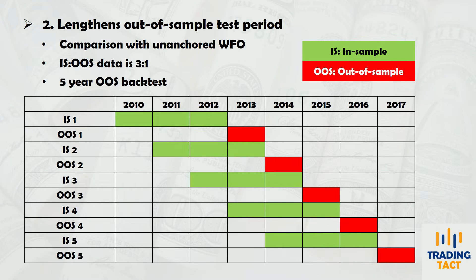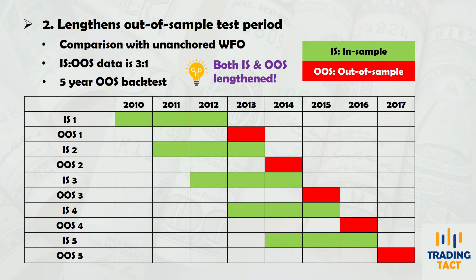Therefore, by cleverly manipulating the available data, walk-forward optimization lengthens both the in-sample training period and the out-of-sample robustness testing period. In fact, the total length of your out-of-sample tests can be even longer, depending on your walk-forward optimization settings, which I'll explain next.